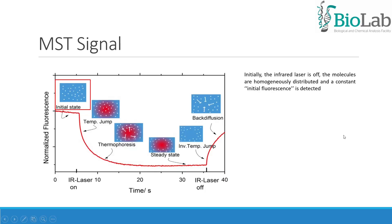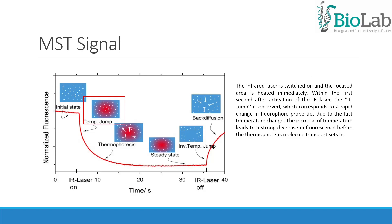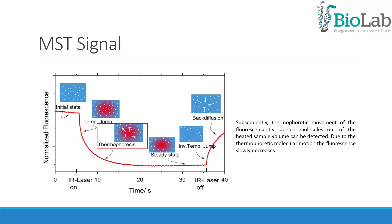In an MST experiment, initially the infrared laser is off; the molecules are homogeneously distributed and a constant initial fluorescence is detected. Then the infrared laser is switched on and the focused area is heated immediately. Within the first second after activation, the T-jump is observed, which corresponds to a rapid change in fluorophore properties due to the fast temperature change. The increase of temperature leads to a strong decrease in fluorescence before the thermophoretic molecule transport sets in. Subsequently, thermophoretic movement of the fluorescently labeled molecules out of the heated sample volume can be detected, and the fluorescence slowly decreases.